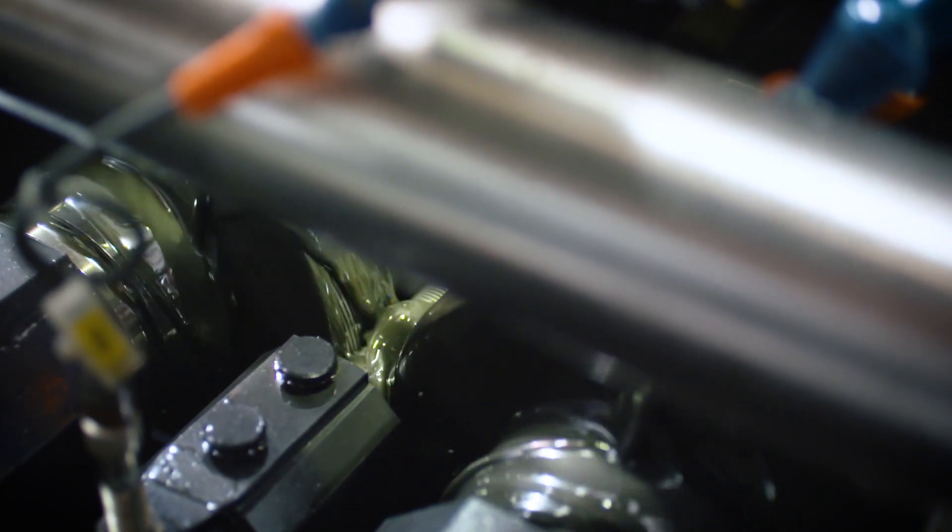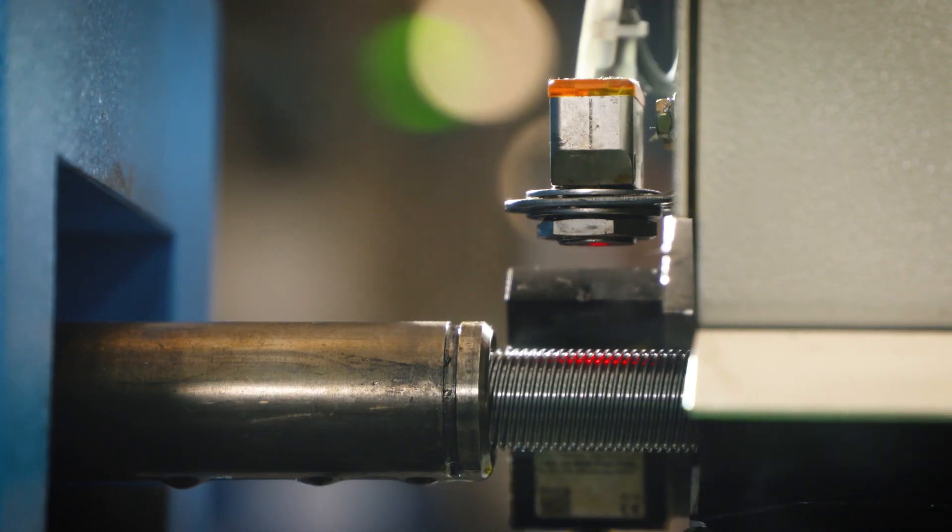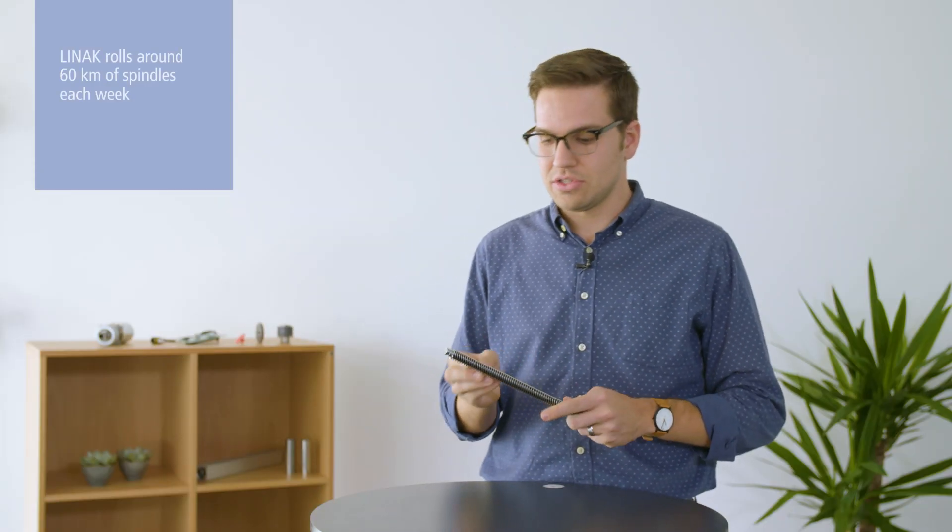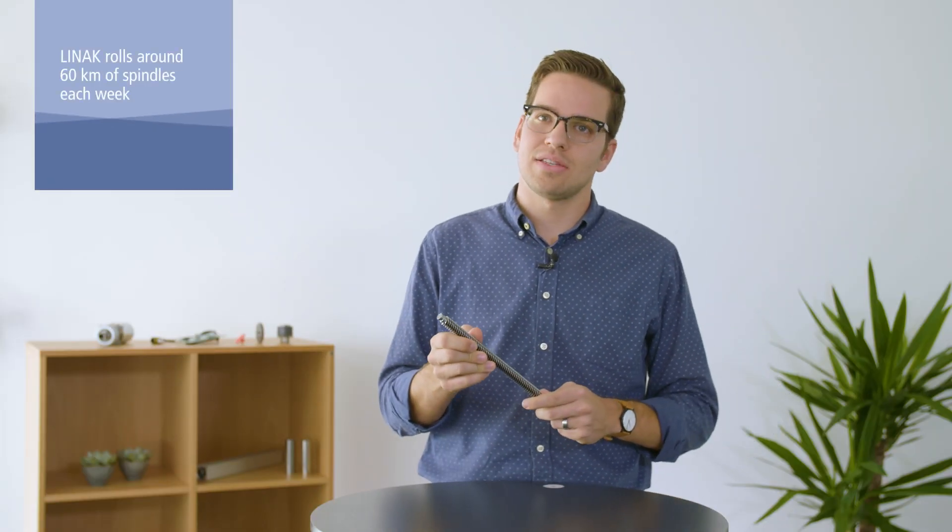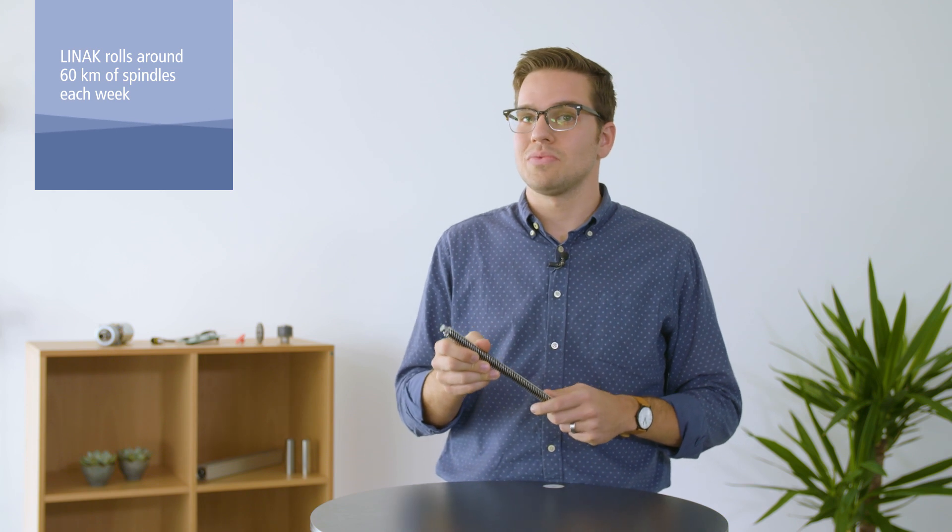The next step is to roll form the spindle threads by applying 25 tons of pressure to the outside of the spindle to create the strongest possible threads. It's important that this process doesn't produce any flakes on the outside because those flakes can get caught in the spindle grease and eventually wear down the spindle nut.